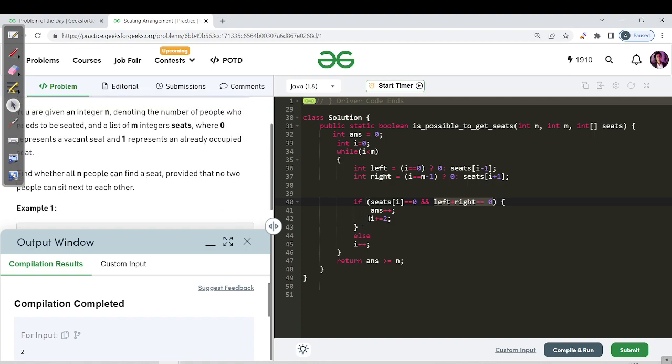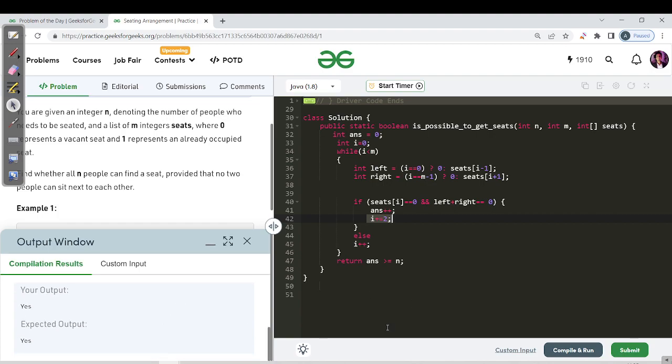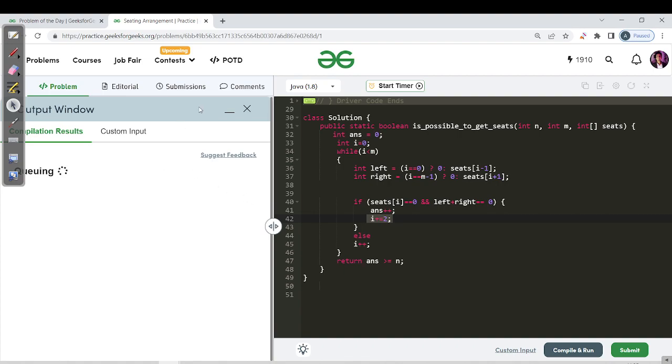So you have to move forward with two indices ahead, and else if that's not the case, you have to keep on checking for each and every index. And at last, you just have to return that whatever the number of persons you will be able to place, if it is greater than or equal to n, then that's it. So you can see that the expected output matches. So let us hit the submit button and while it is submitting,